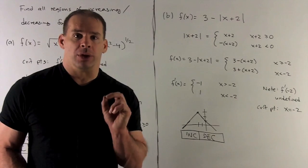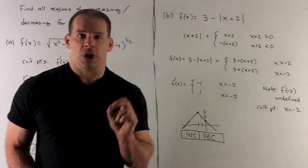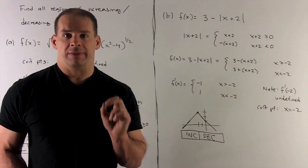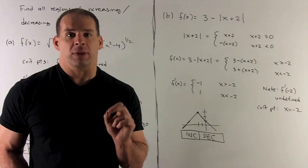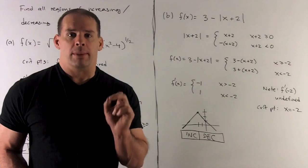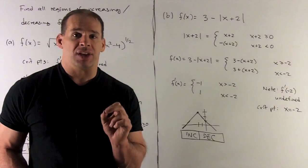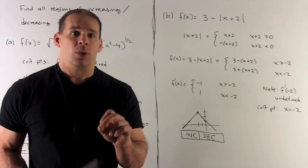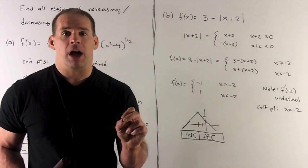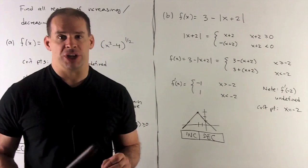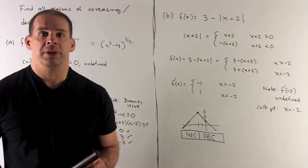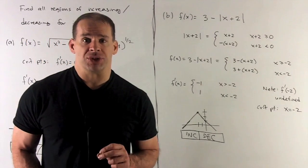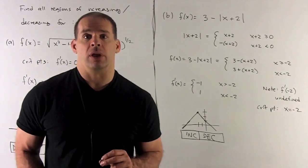To approach this, we first want to get rid of the absolute value signs by rewriting the function as a piecewise defined function — splitting the domain into regions with a different expression for each. We need to get the absolute value of (x + 2) under control.